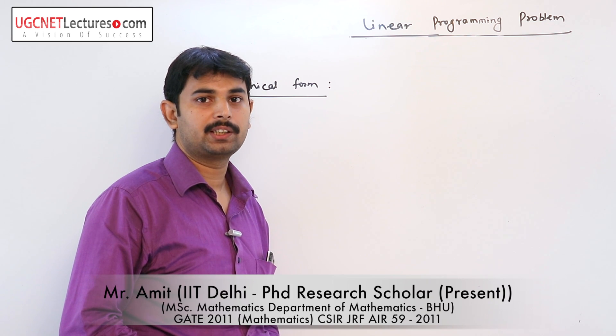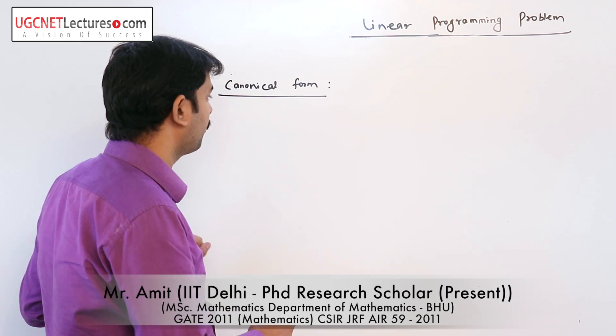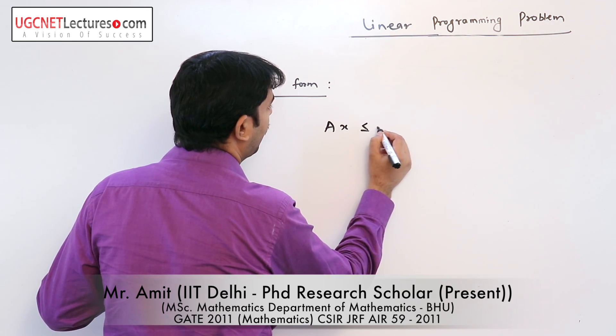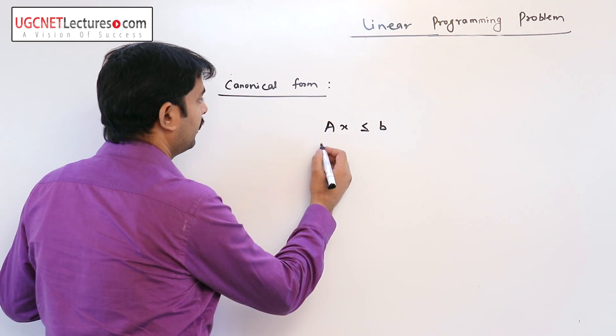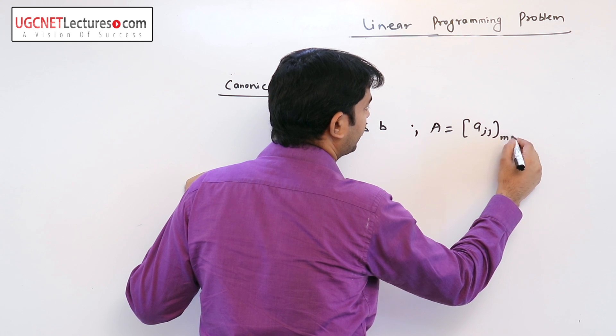Another form of general linear programming is known as canonical form. In canonical form, the constraints are of less than equal to b, here A is an m cross n matrix.